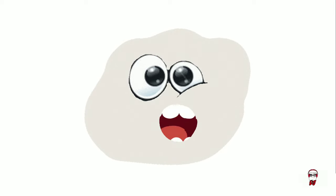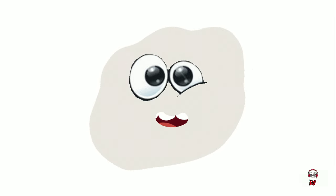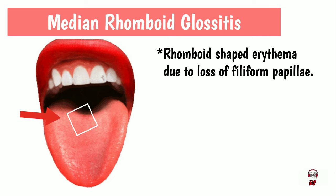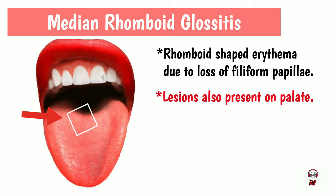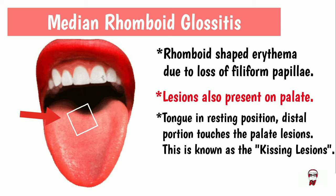Those are my acute and chronic forms. But sometimes I can occur as lesions. When you notice central papillary atrophy affecting the midline of the posterior dorsal tongue, it is known as median rhomboid glossitis. A rhomboid-shaped erythematous zone is seen, and the erythema is due to the loss of filiform papillae. The lesions are also present on the palate. When the tongue is in a resting position, the dorsal tongue lesion touches the palatal lesion — this is known as the kissing lesion, because of the close intimacy.